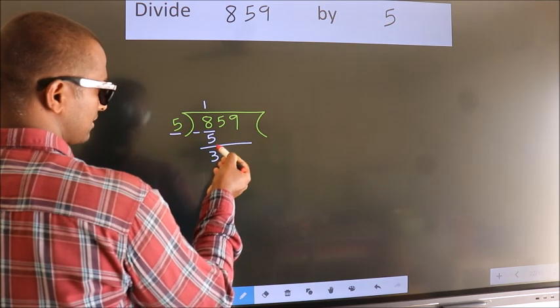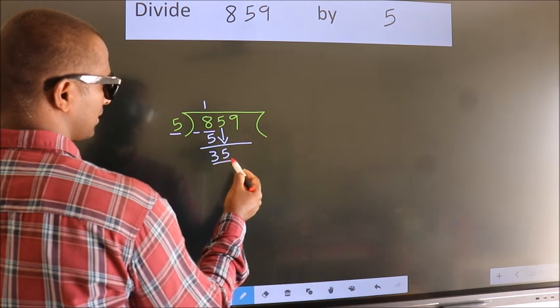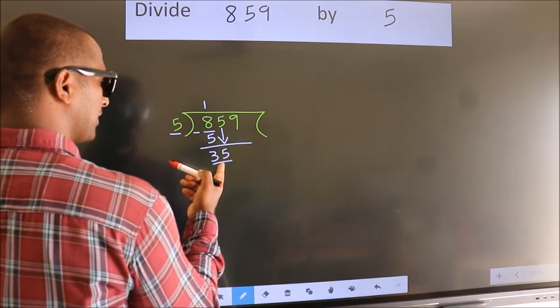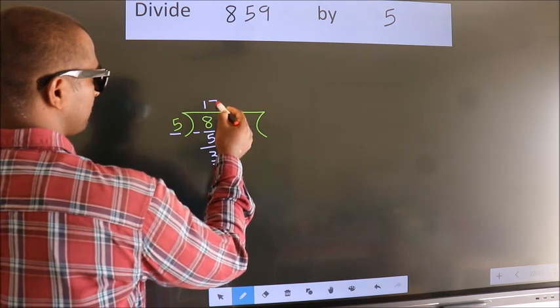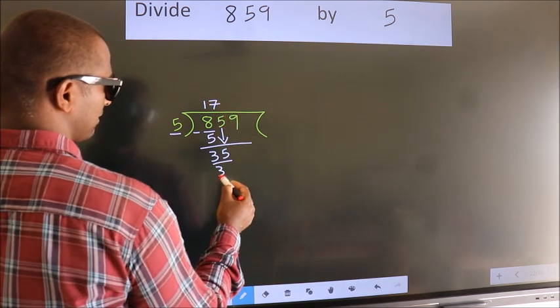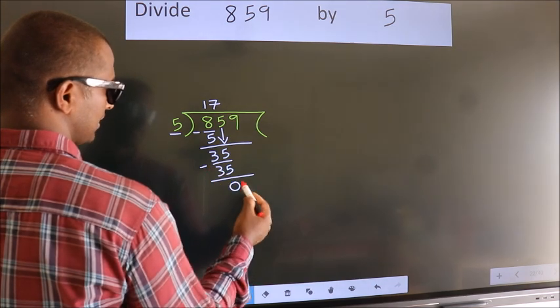After this, bring down the next number. So 5 down. So 35. When do we get 35 in 5 table? 5 times 7 is 35. Now we subtract. We get 0.